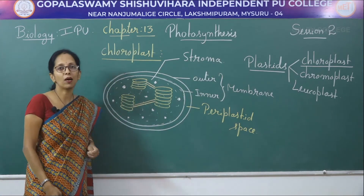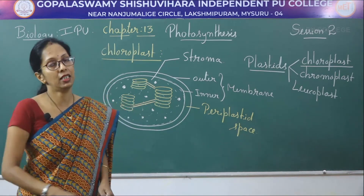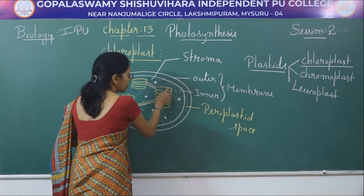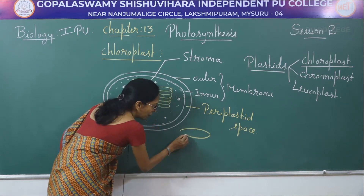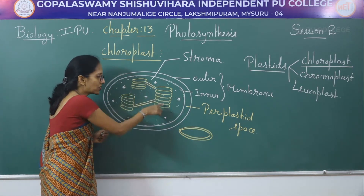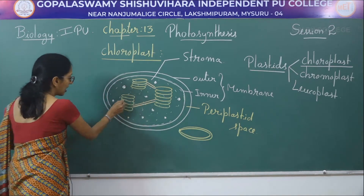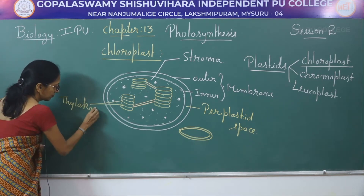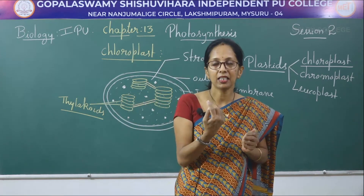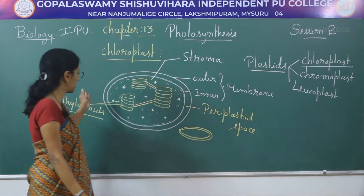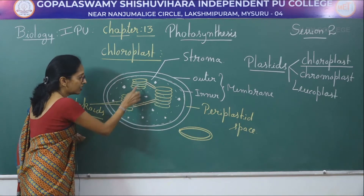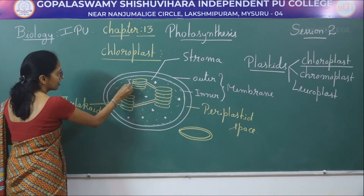The inner membrane encloses a liquid part called stroma. In the stroma there is a presence of reserved food materials, ribosomes, and nucleic acid. There are also flattened double membrane disc-shaped structures called thylakoids. These thylakoids are placed one above the other to form a structure called grana.